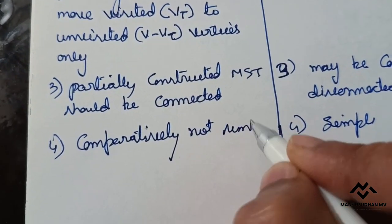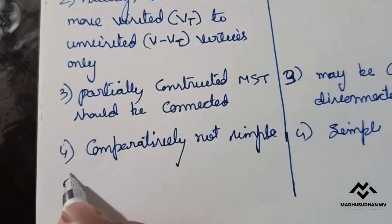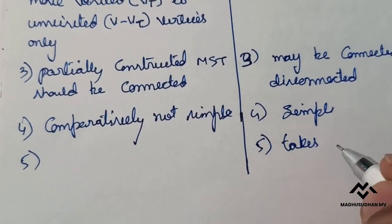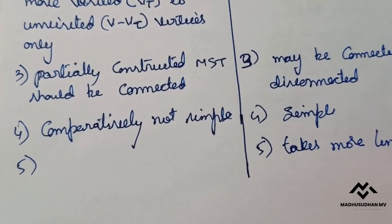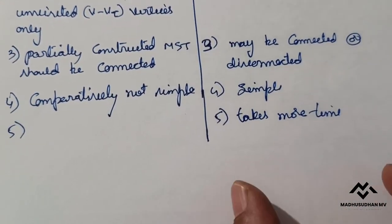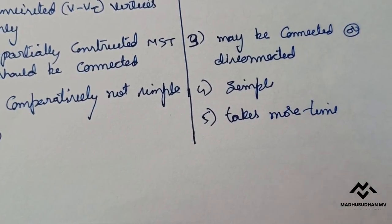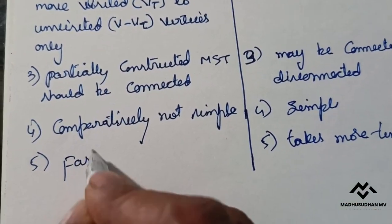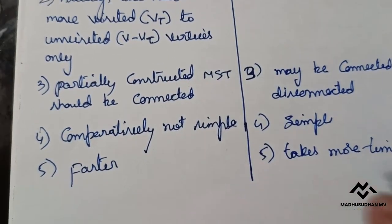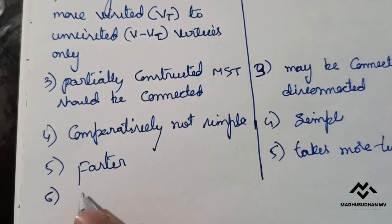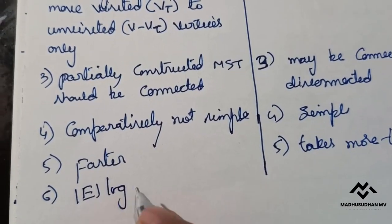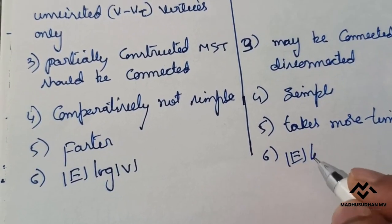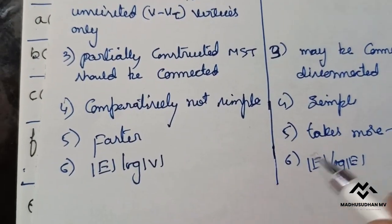The fifth difference: Kruskal's algorithm takes more time because it has to sort the edges first, which takes significant time, and then check everything. So Prim's is faster when compared to Kruskal's. The sixth difference — time complexity: Prim's algorithm has a time complexity of O(E log V), whereas Kruskal's algorithm has a time complexity of O(E log E).